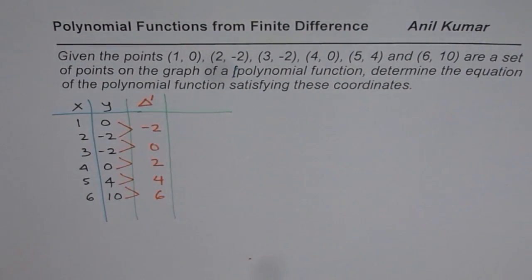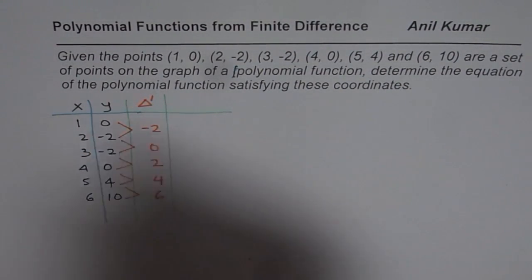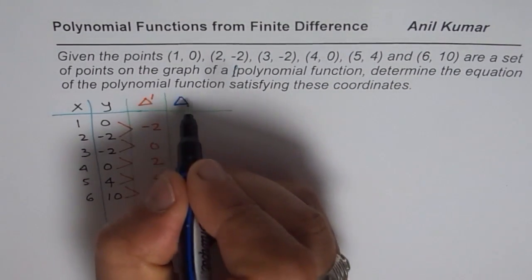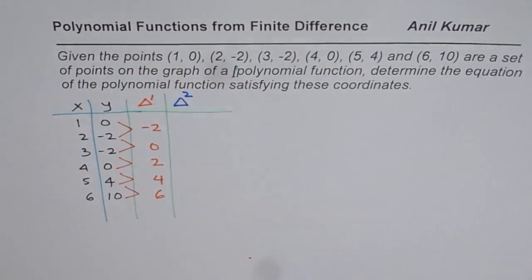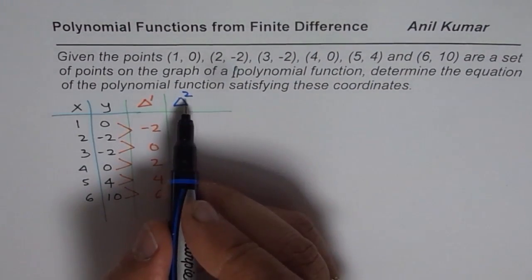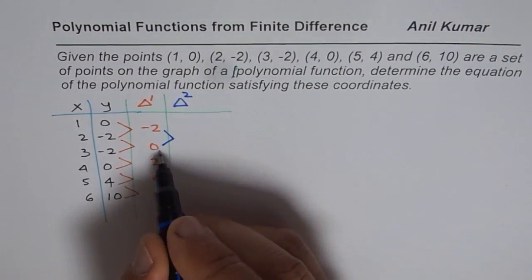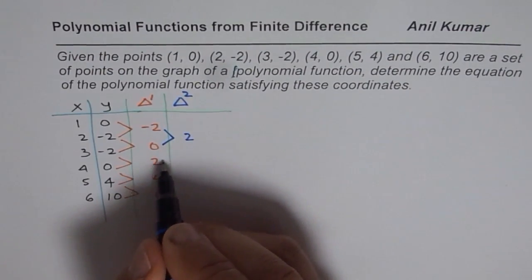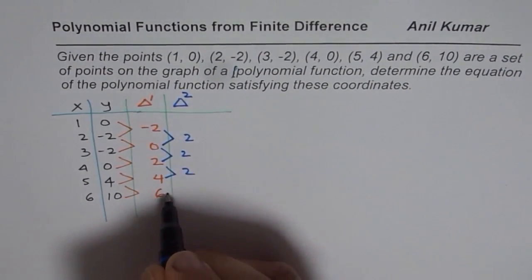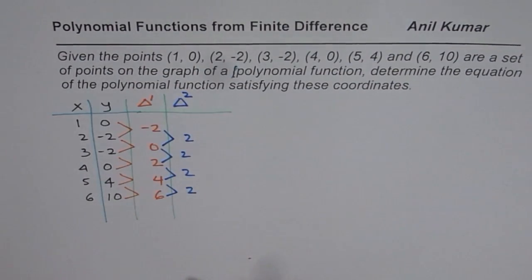Let us find the second difference now. Okay, so I'm indicating second difference with delta as a difference and 2 means second difference for me. That will also give me degree of my polynomial. So the second difference will be 0 minus 2 is 2. 2 minus 0 is 2. 4 minus 2 is 2. 6 minus 4 is 2. It is constant.